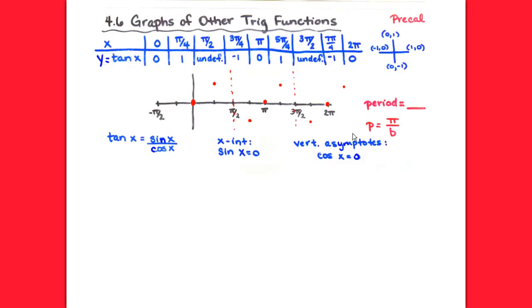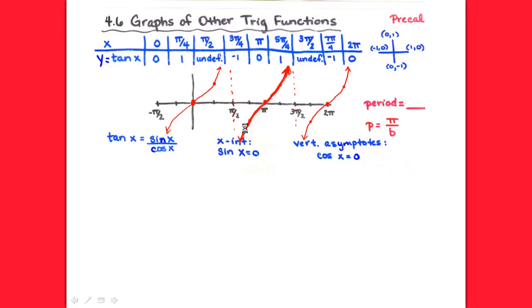That's the idea of periodic. Anytime we have a graph that does the same thing over and over again, we say that graph is periodic. If we play dot to dot, we'd be tempted to draw a straight line, but I know I approach the asymptote over here and it curves up, and over here it curves down. It's not perfectly straight — it has a little bit of a curve to it, kind of like y = x³, a cubic function that slides through at 0. Not exactly, but a similar look.